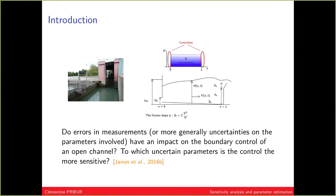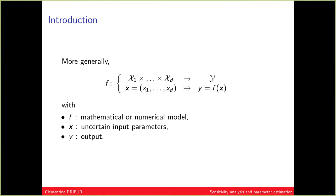The second example is the control of the water height in a channel. Here we have a control loop that takes as input some measurements, and these measurements have error. We would like to know which measured data are most influential on the water height, in order to measure them more accurately. These are typical questions of sensitivity analysis.